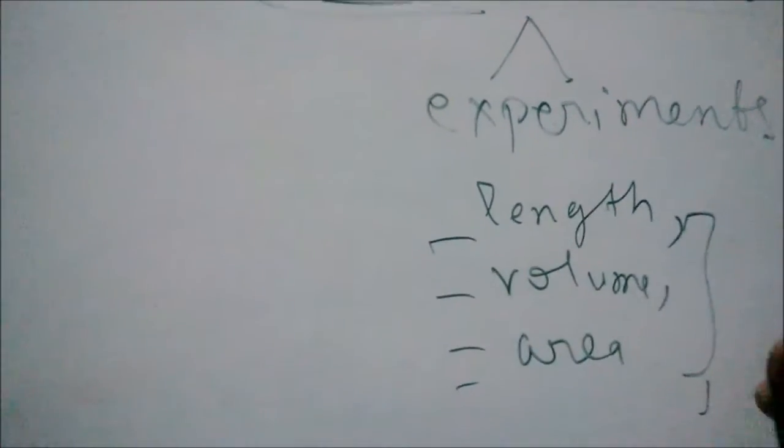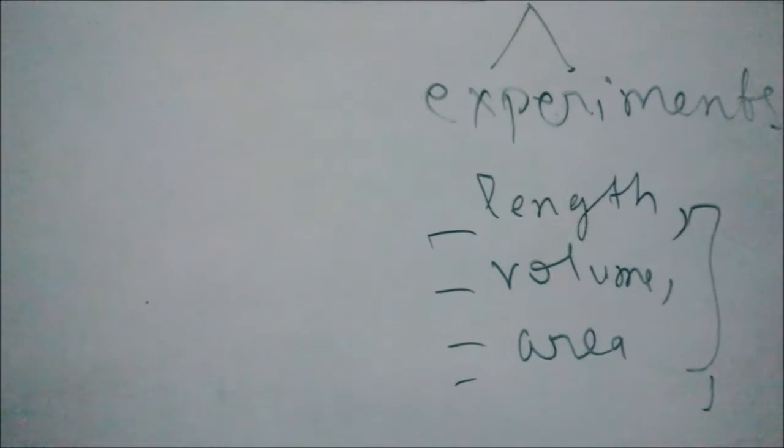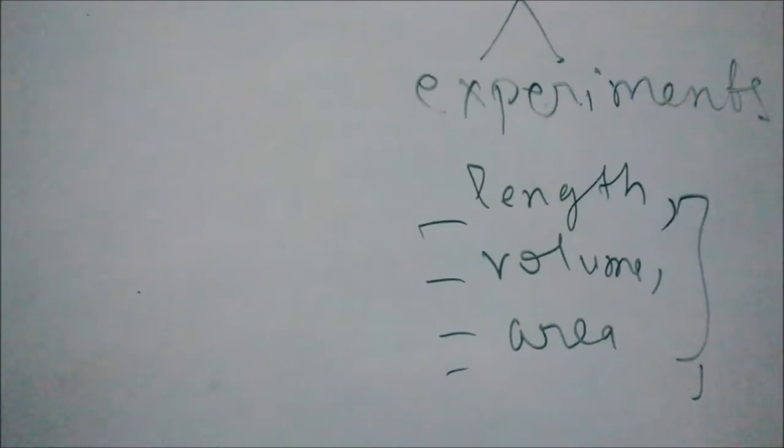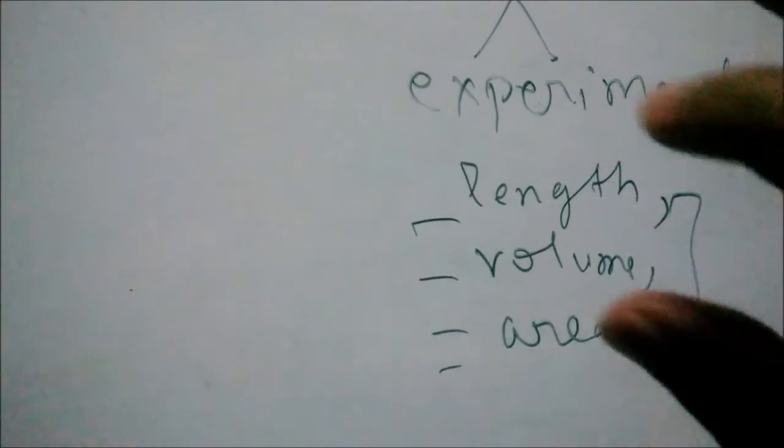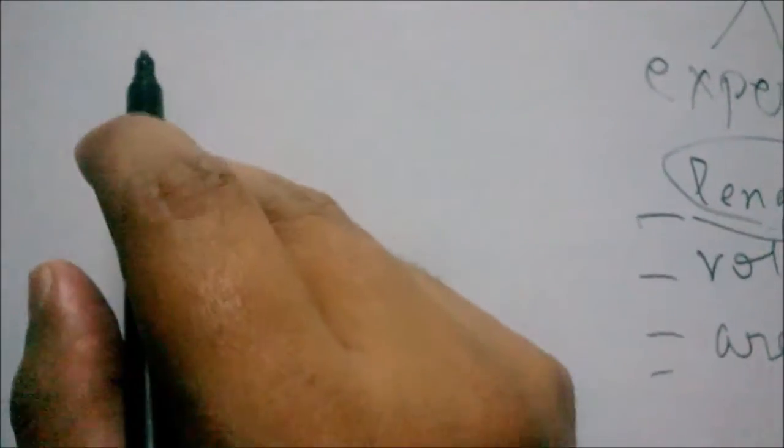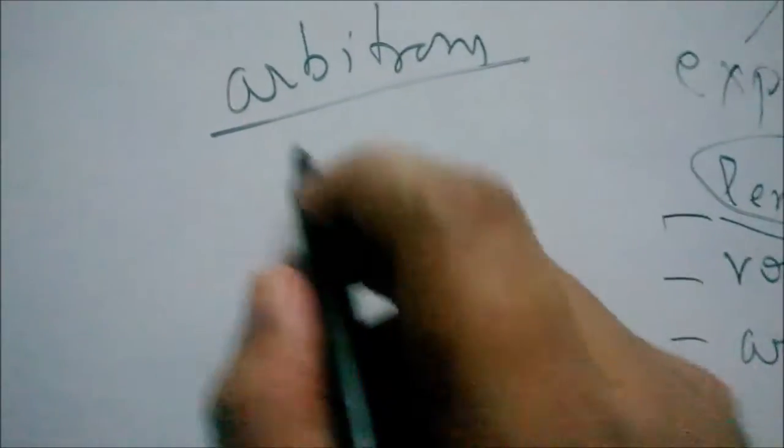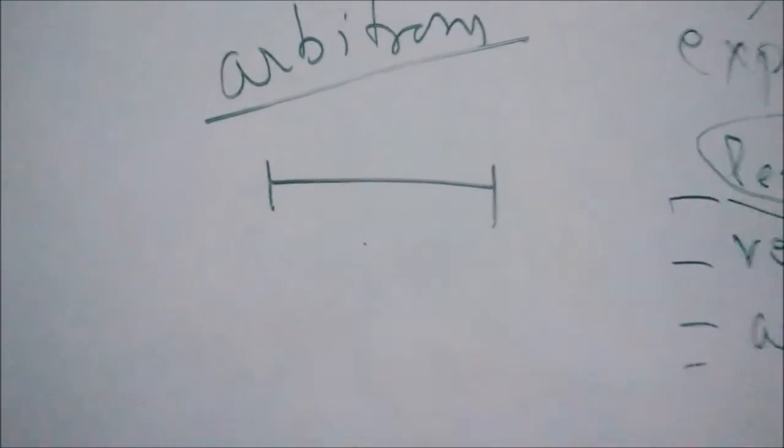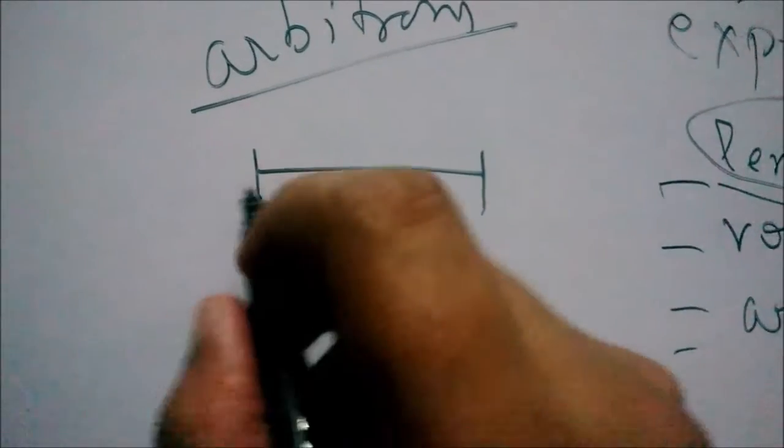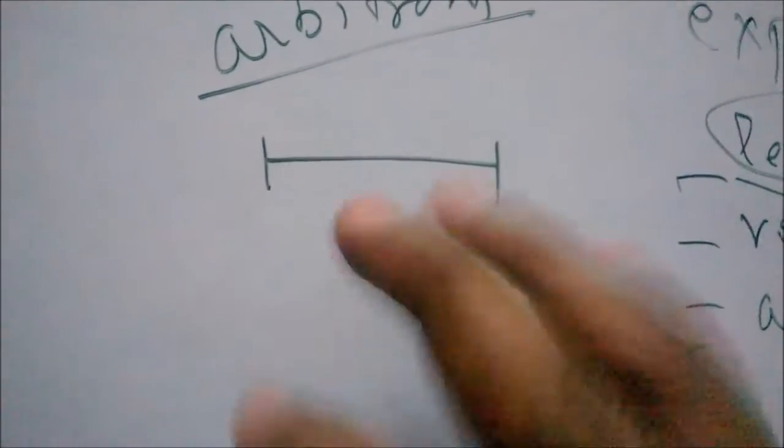Let us try to find out how this measurement came into place. I'll tell you the basic idea and with that you can understand how scientists or mathematicians may have come up with an idea to measure everything in nature. Let us first talk about length. We would have started with an arbitrary measurement system. For example, if I need to measure this, I could have done many things.